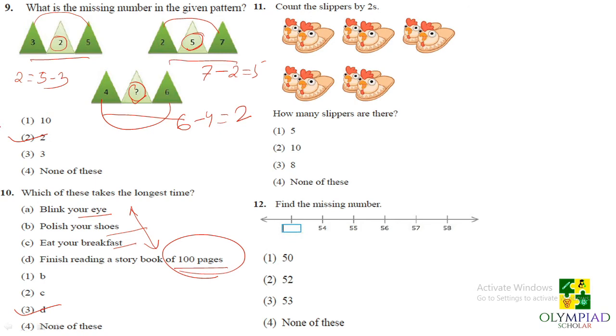Next question count the slippers by 2's. So that means here 2, 2, 2, 2, 2 and 2. So there are 5 twos that means if you count by 2's then 2 plus 2 is 4, 6, 8 then 10. So you can say there are 10 slippers.